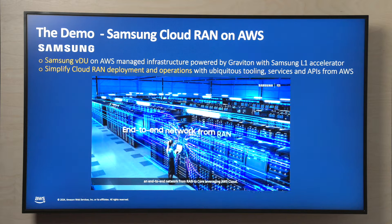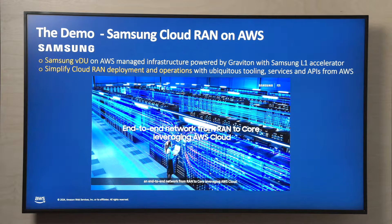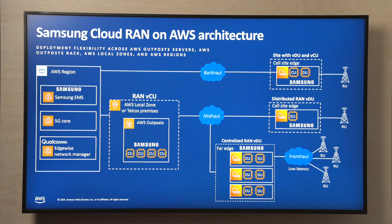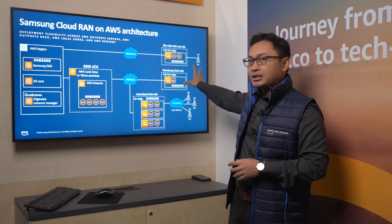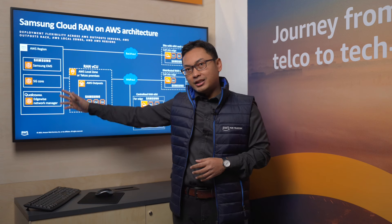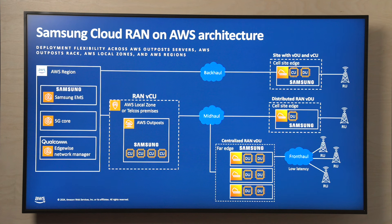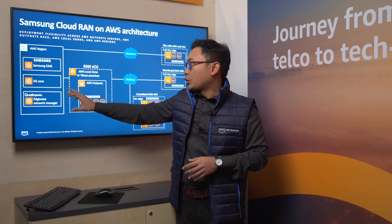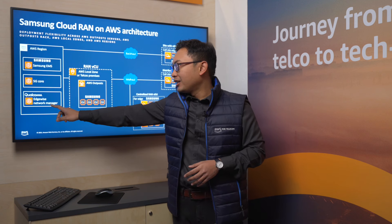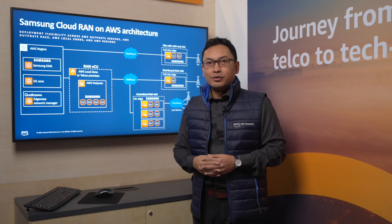Samsung and AWS have been working closely together and will continue to build an end-to-end network on AWS Cloud. Since the radio stack is running on AWS Cloud — starting from cell sites on the DU, then CU on region and local zones — we can add more use cases in the cloud by working with partners such as Qualcomm Edgewise Network Manager to do Gen AI-based network optimization and operation. The Samsung EMS is also running in the region so that RAN KPIs (Key Performance Indicators) flow from the radio sites to the Samsung EMS, and Qualcomm Edgewise processes the data for those use cases.